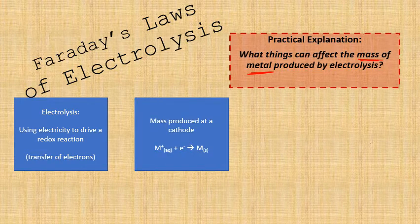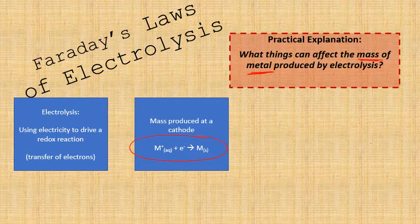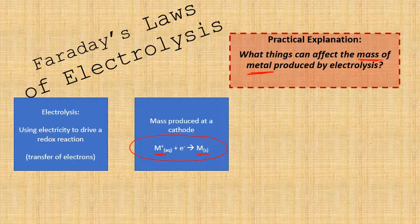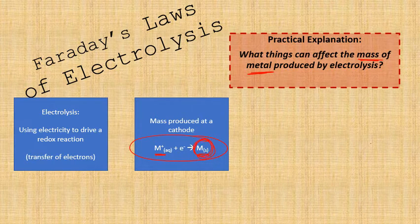The mass of something produced at a cathode will be based around this equation here. This equation is to do with any random metal ion being reduced by adding electrons to it and forming metal solid. So if we are looking at this particular reaction, what is going to affect the mass of metal produced?